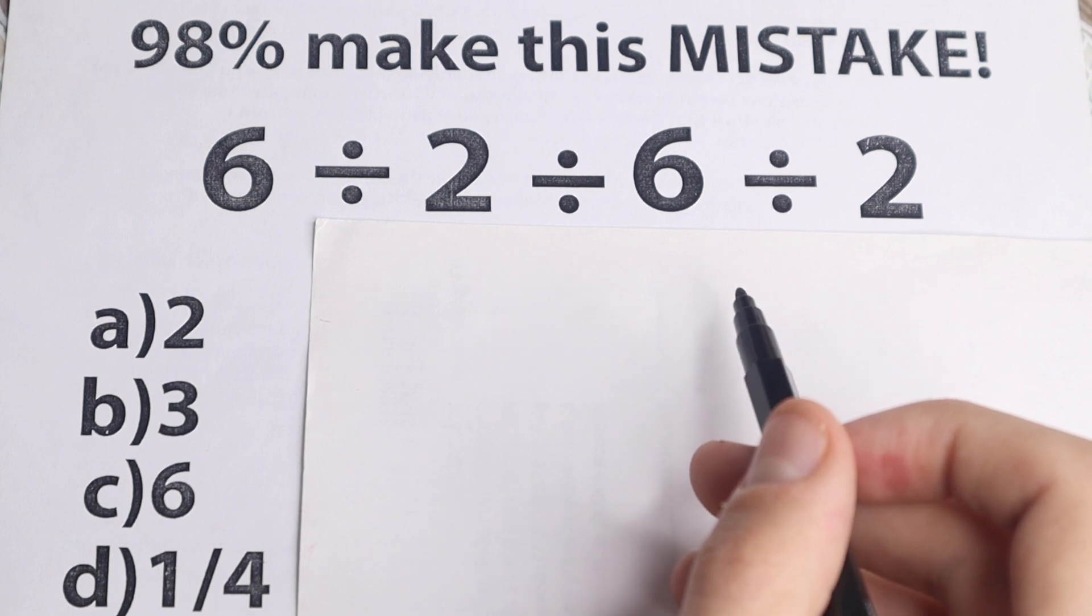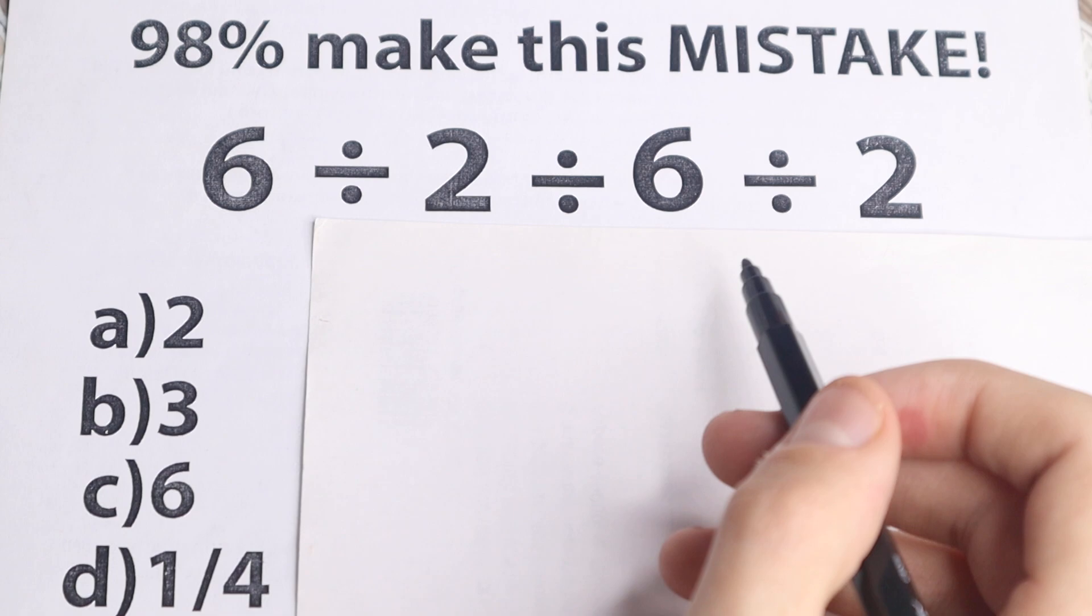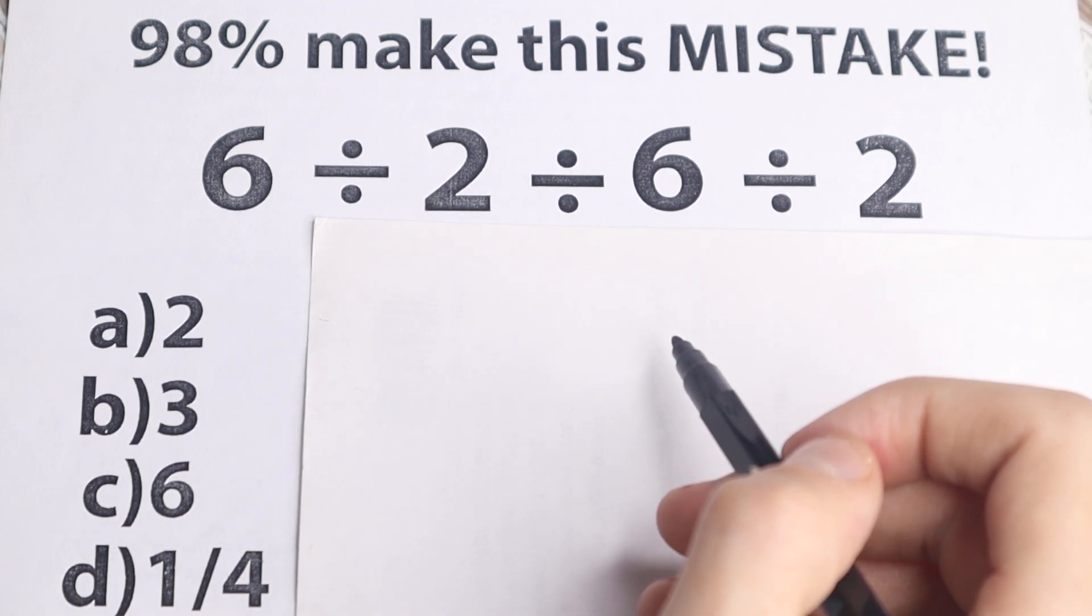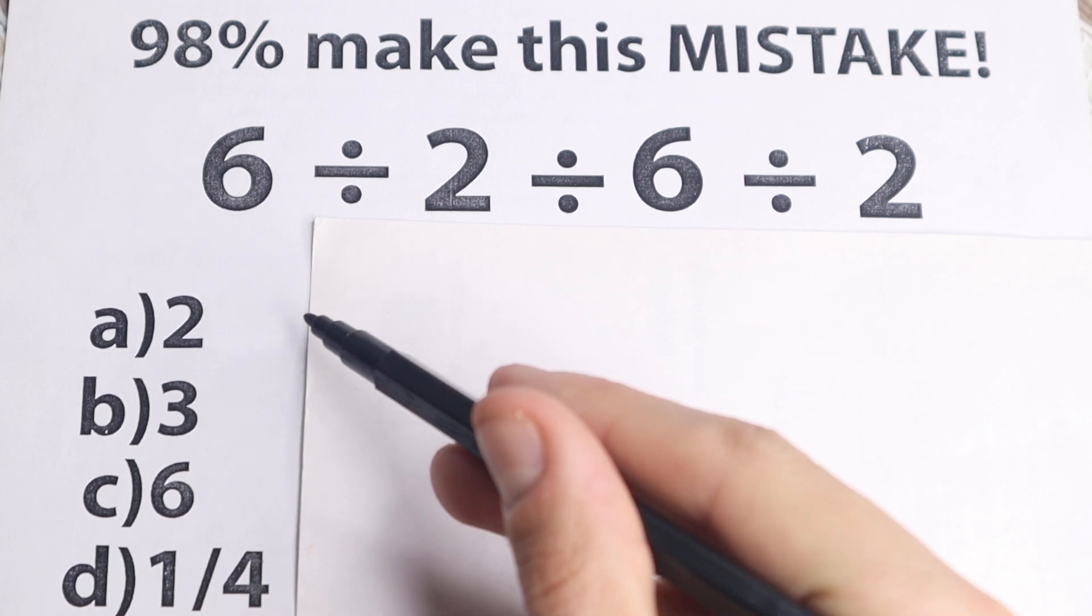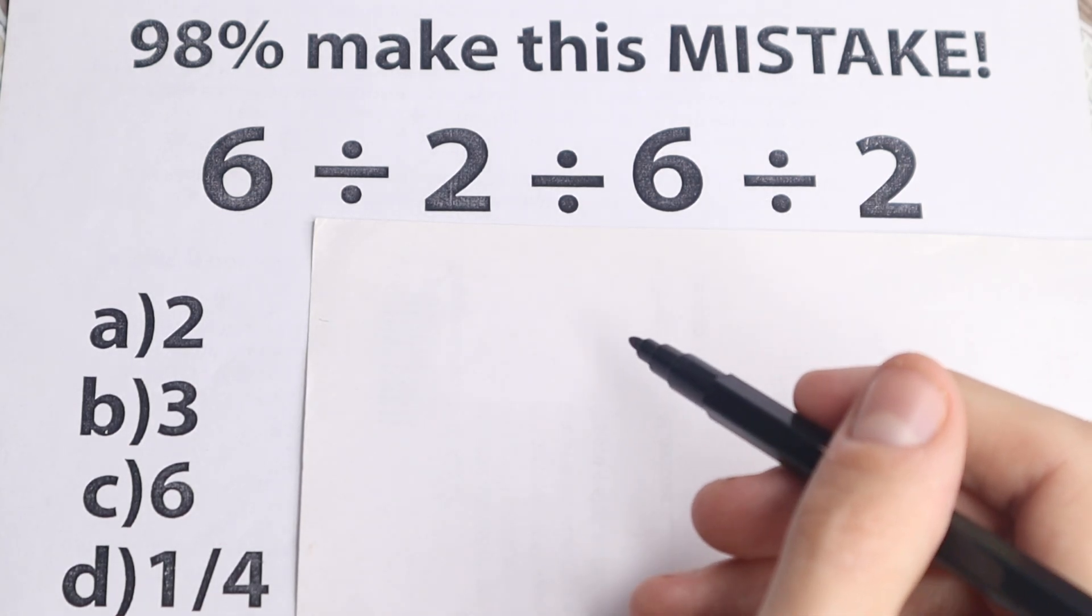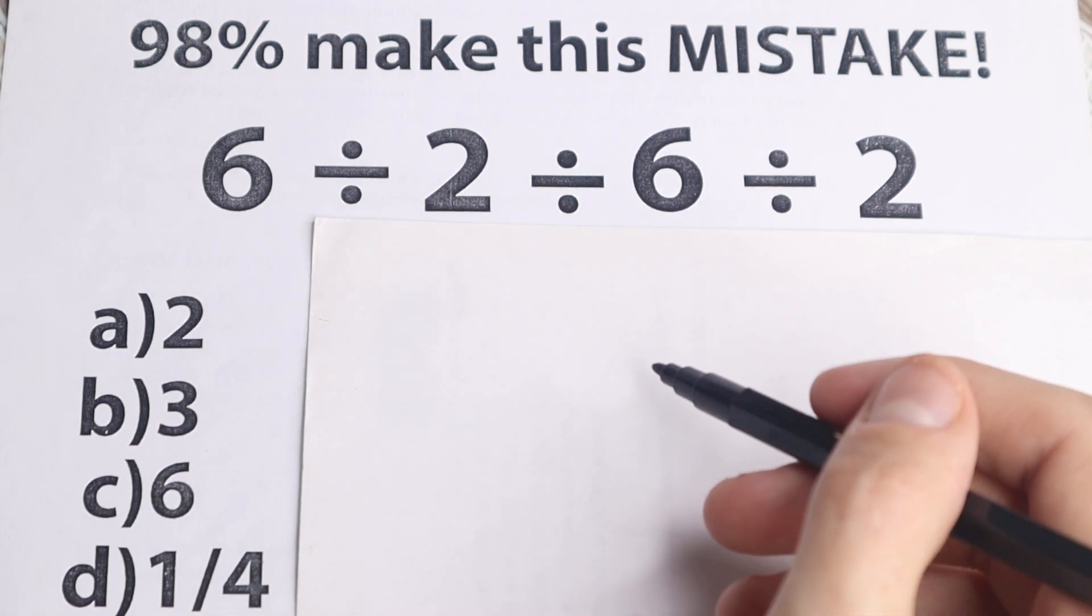Okay, so a lot of students out there are like, yes, I can handle this problem, this is basic division, I learned this stuff in the third grade, and I can easily solve it. And right now I suggest you to choose one option, what do you think is a correct answer: we have 2, 3, 6, and 1 fourth, and I hope you solve it correctly. So choose one option and write your answer down in a comment section.